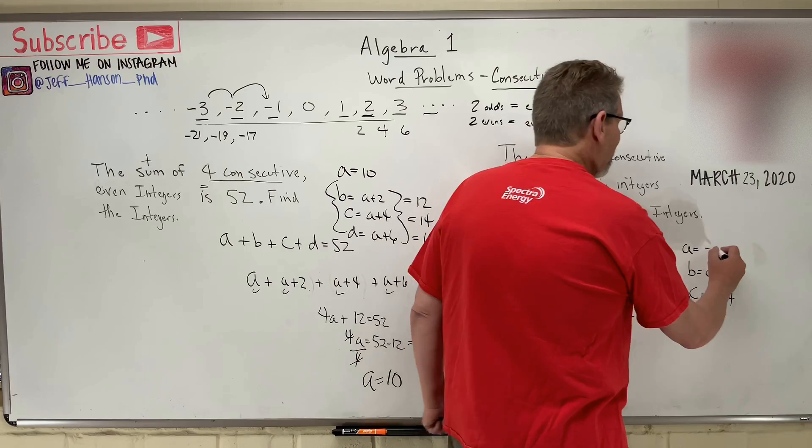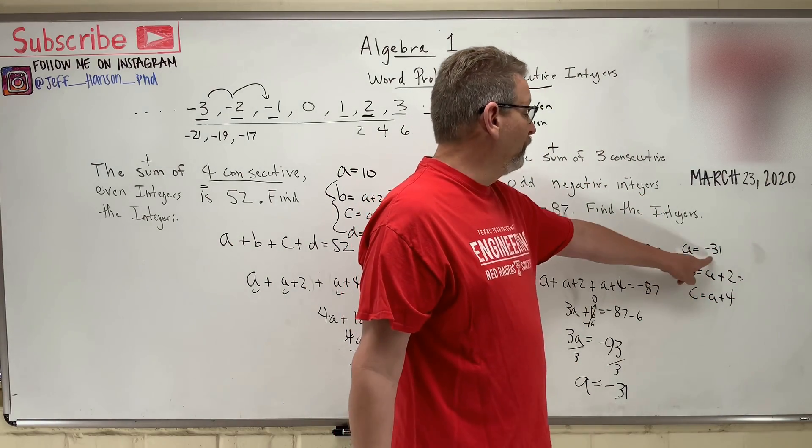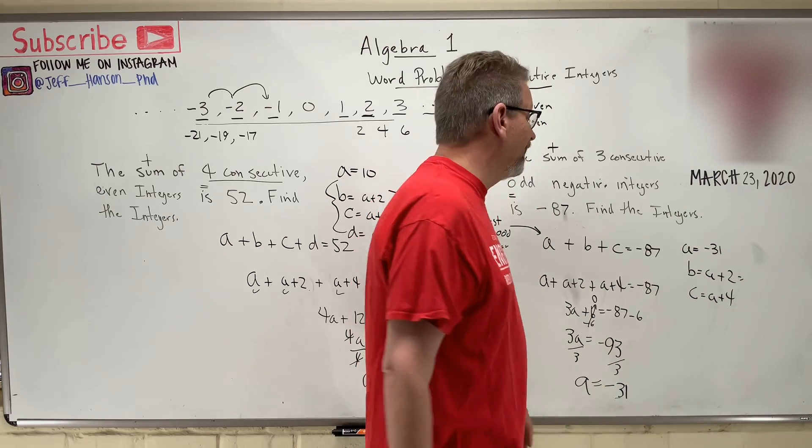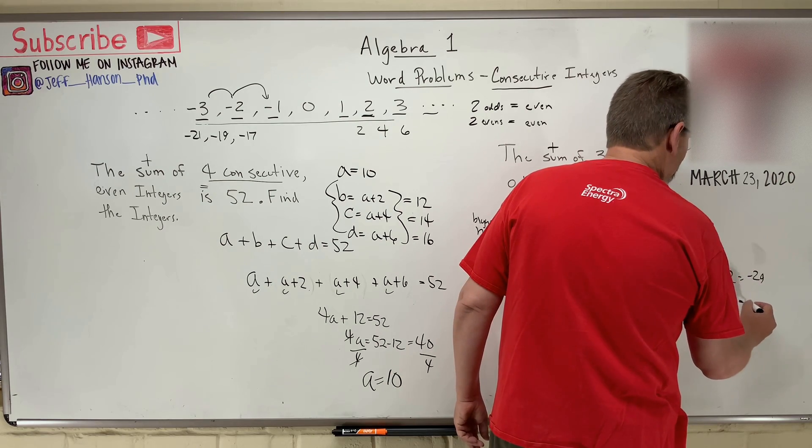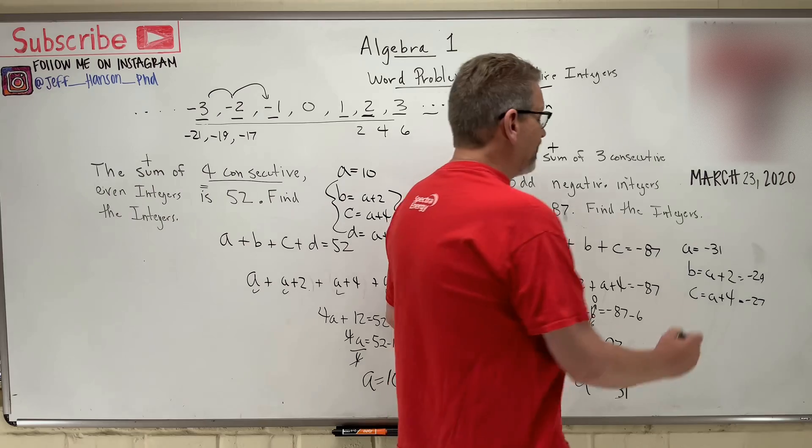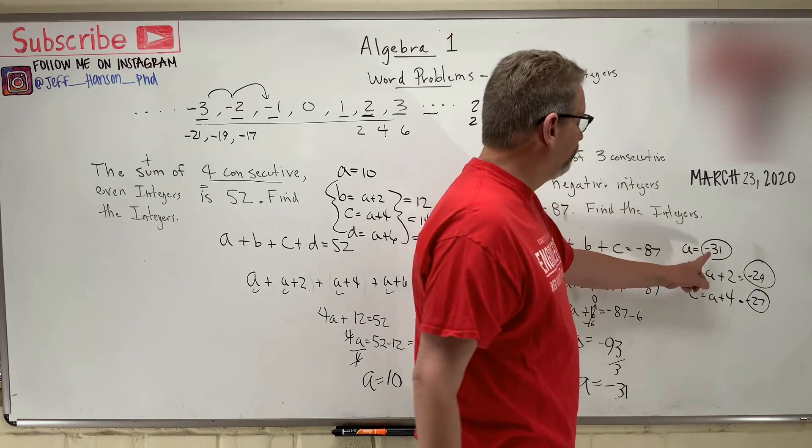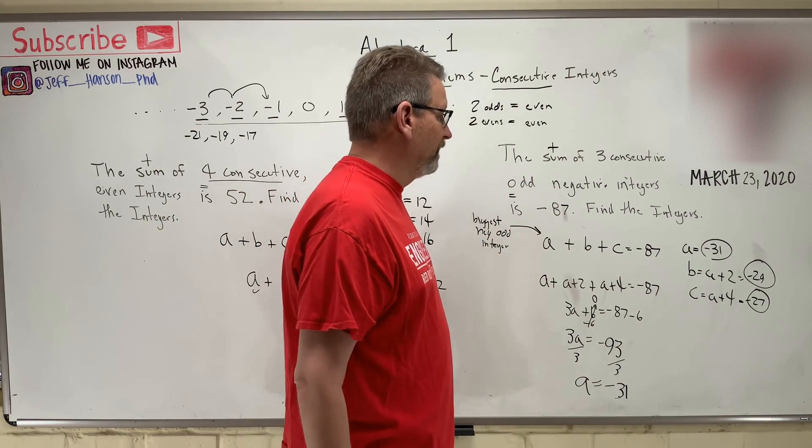So if A is negative 31, then what's B? Plus two, okay? I got a negative and I add two positives to it, right? It gives me what? Negative 29 and this guy negative 27, okay? So there's our three consecutive numbers. One, two, three, and if I add those three together, they should give me negative 87, okay?